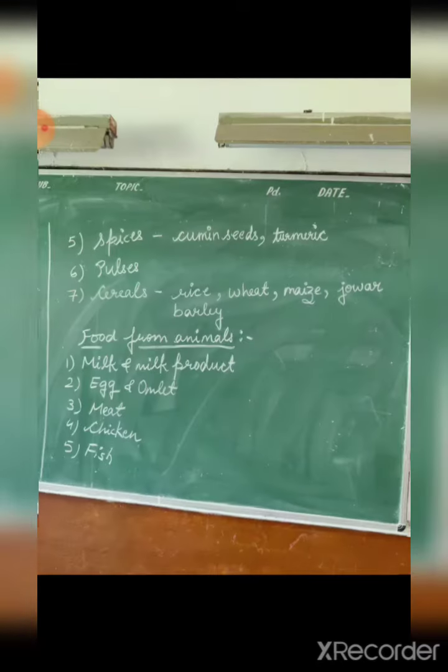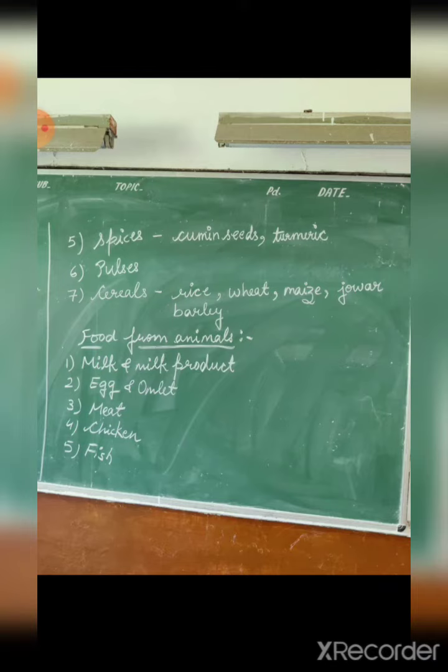Next, the spices — we get spices from plants: cumin seeds, turmeric, chili, cardamom, cinnamon, clove. All these you get from plants. Spices have a major role in Indian food.